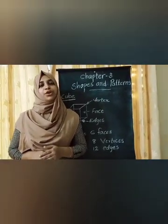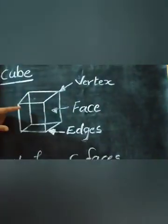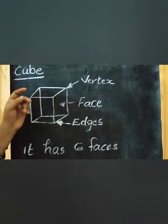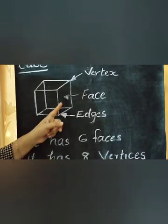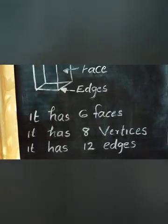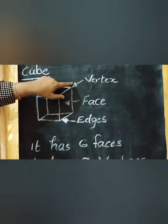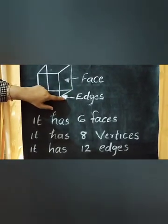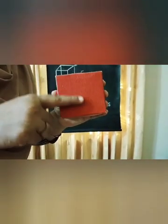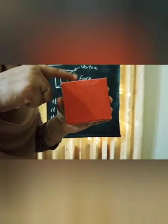Now I will show you the Cube first. It is a Cube. A Cube has Vertices, Faces, and Edges. All of you look at this object — it is a Cube. The plane surface of any face of this Cube is called a Face. Where two faces meet, it becomes an Edge. Where edges meet at a corner, that is called a Vertex.